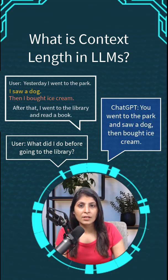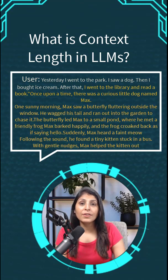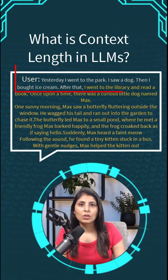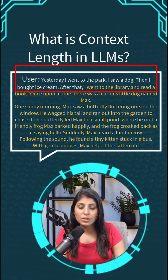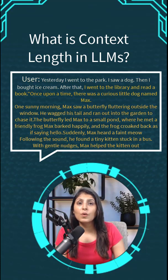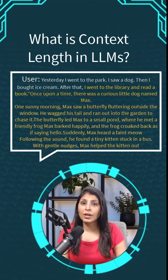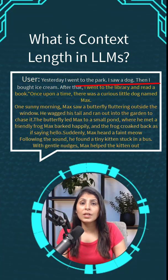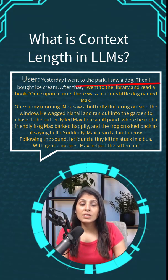But if your conversation becomes very long and if it exceeds the context length, then the LLM may forget the earlier parts. For example, if you have a chat that has thousands of words, then it might only remember the last few hundred words. So if you ask the same question, it may forget about the park and the dog and only remember about the library part.